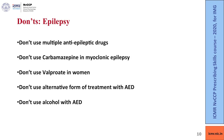As a physician of first contact, there are certain things you must never do when treating a patient with epilepsy. Never use multiple anti-epileptic drugs at once. Don't use carbamazepine in a patient with myoclonic epilepsy. Don't use valproate in women. Do not use alternative forms of treatment with anti-epileptics, as these can interfere with therapeutic efficacy and result in breakthrough seizures. Do not use substances of abuse or alcohol with anti-epileptic drugs.